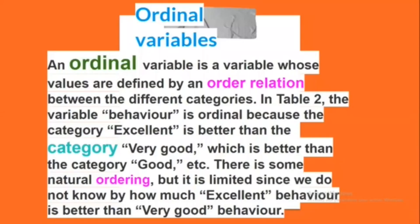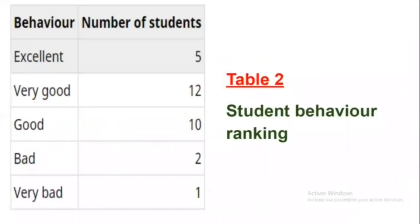An ordinal variable is a variable whose values are defined by an order relation between the different categories. For example, the variable 'behavior' is ordinal because the category 'excellent' is better than 'very good,' which is better than 'good,' etc. There is some natural ordering, but it is limited since we do not know by how much excellent behavior is better than very good behavior. Even if categorical variables are not quantifiable, they can appear as numbers in a dataset, with correspondence established during data coding. To identify the type of variable, it is important to have access to the metadata — the data about the data — which should include the code set used for each categorical variable.